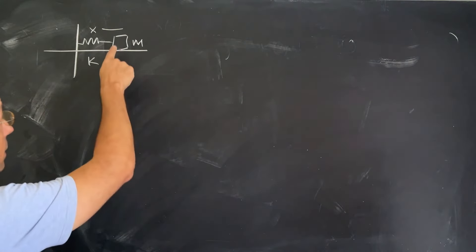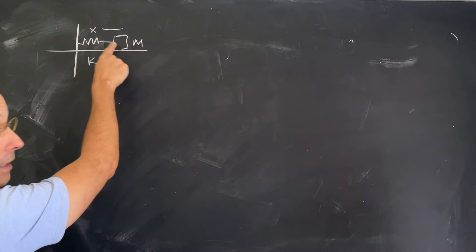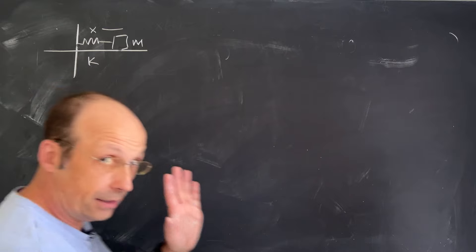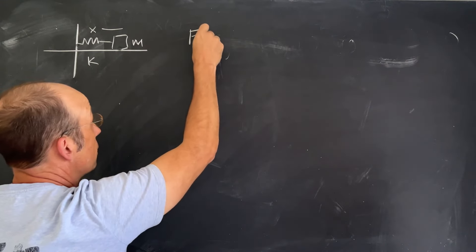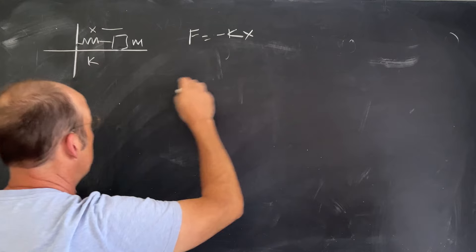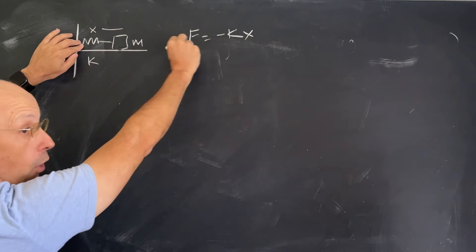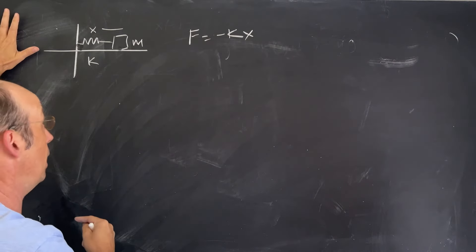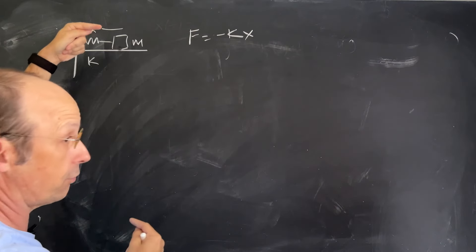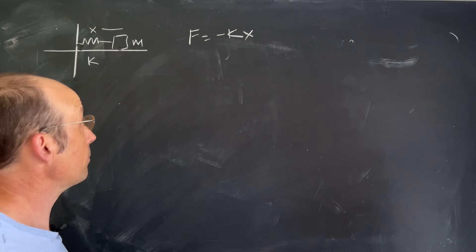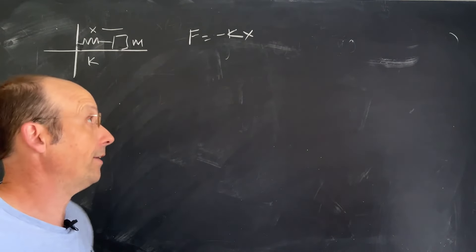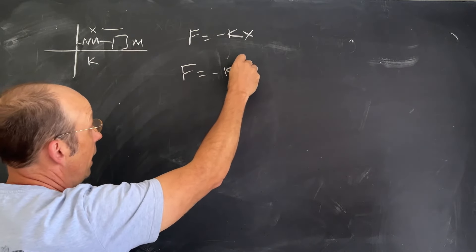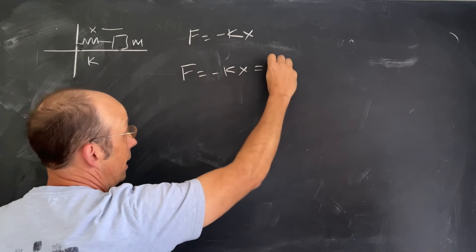The idea is that if I have a mass connected to a spring, and this spring exerts a force that looks like negative kx — so if I pull the mass, the more I pull it this way, the greater the backwards pulling force. If the mass went to the negative x side, then the force would be in the positive direction. The force is always going to pull it back to the origin. If that's the only force acting on it, I can write Newton's second law as negative kx equals mass times acceleration.